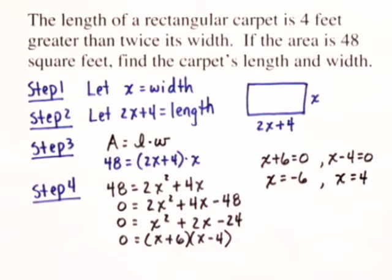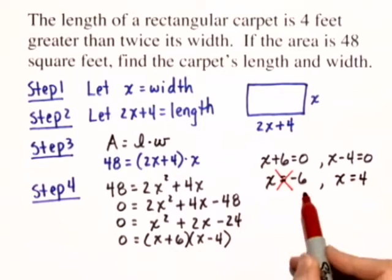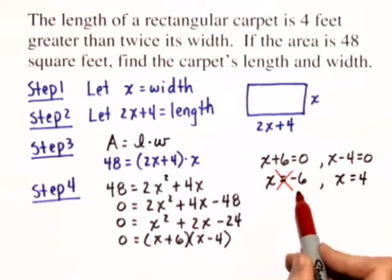But remember, x represents the width of a rectangle, so x equals negative 6 cannot be a possible solution since the width of any rectangle cannot be negative.